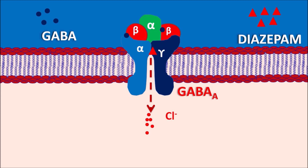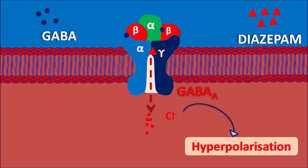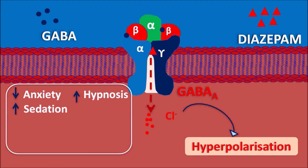Two GABA molecules can bind to the GABA-A receptors — between the first alpha/beta subunit pair and the second alpha/beta subunit pair — which opens inward-going chloride channels. Because of their negative charge, chloride ions produce hyperpolarization. So instead of depolarization, CNS cells undergo hyperpolarization, resulting in an inhibitory effect. Due to diazepam, the inhibitory response is increased within the CNS, resulting in decreased anxiety.